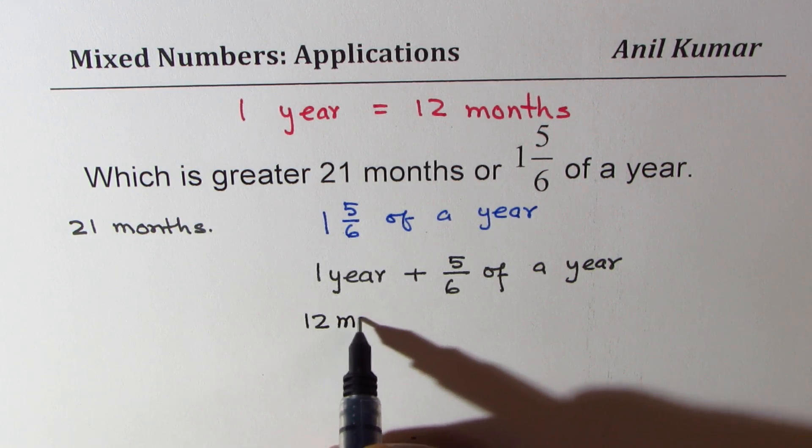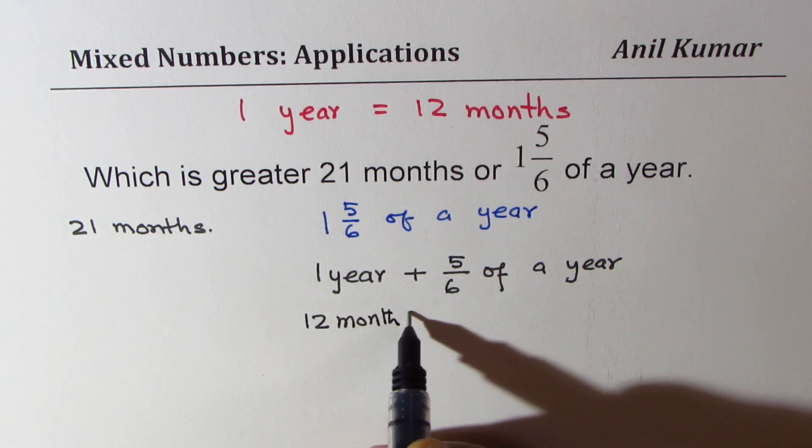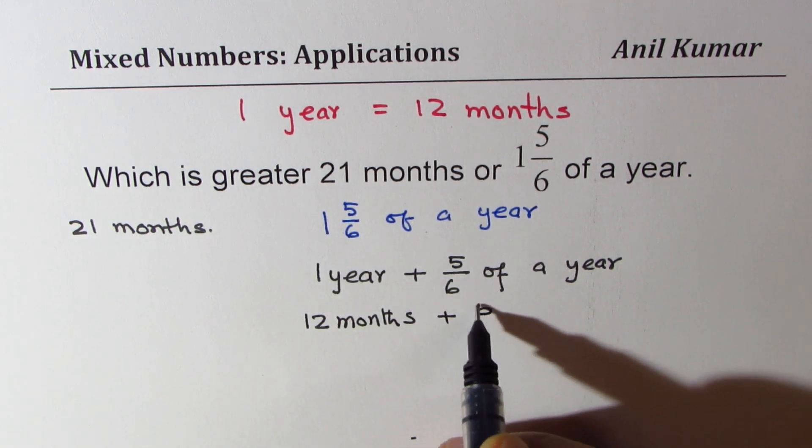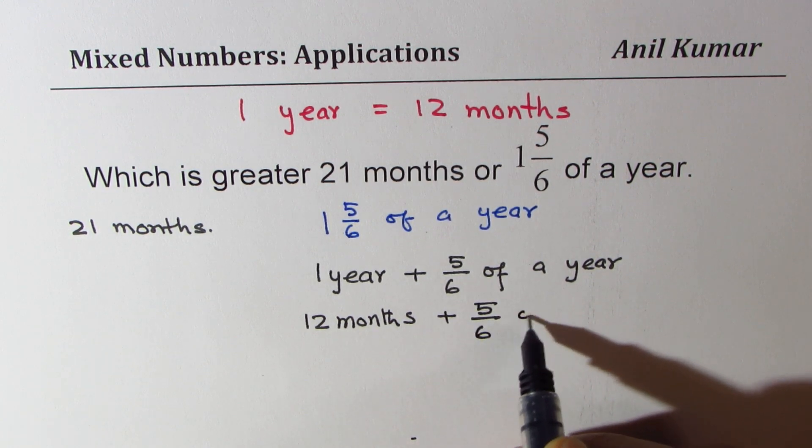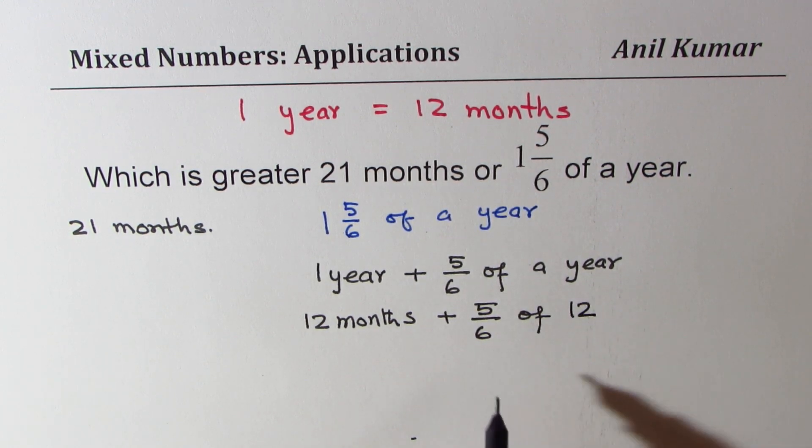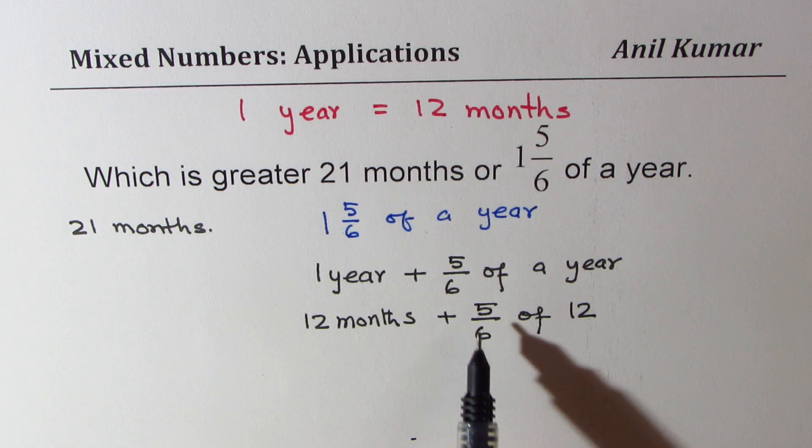can write this as 12 months plus 5/6 of 12, right? 5/6 of 12, so 1/6